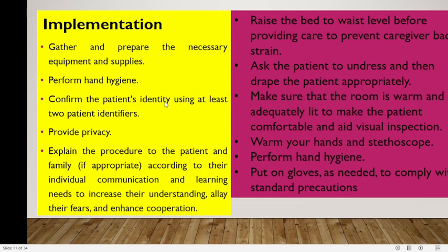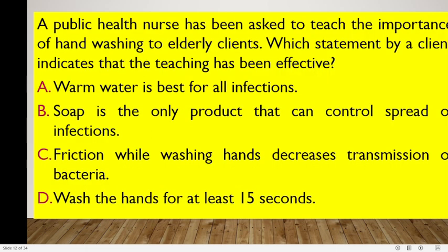On implementation: gather and prepare necessary equipment, perform hand hygiene, confirm patient identity using at least two patient identifiers — name and age — provide privacy, and explain the procedure to the patient and family as appropriate. Raise the bed to waist level as part of ergonomics policy. Ask the patient to undress and drape appropriately; if needed, a chaperone should accompany you. Ensure the room is warm and adequately lit, wash hands and the stethoscope, and put on gloves as required.